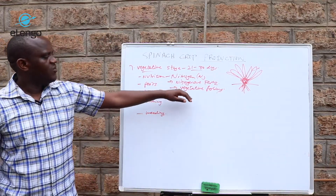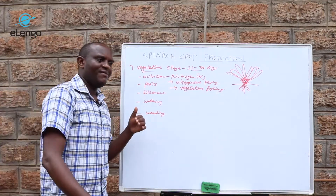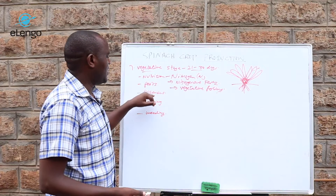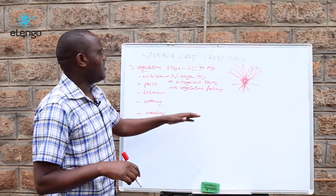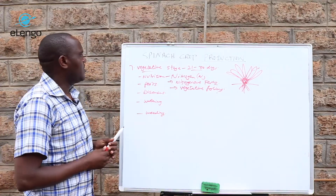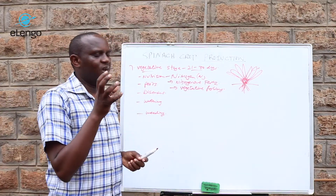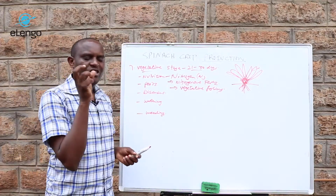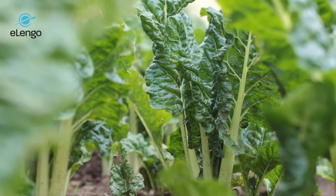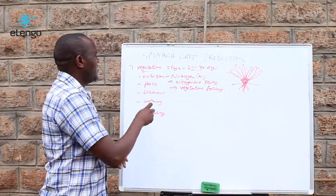We also have foliar fertilizers — vegetative foliars. When you go to agro shops you will find vegetative foliar feeds. When you are doing your 7 to 14 day spray using an insecticide and a fungicide, you include a nitrogen fertilizer, and that is going to give the green pigment required for vegetative establishment of the spinach crop. The leaves at this stage are soft and succulent.